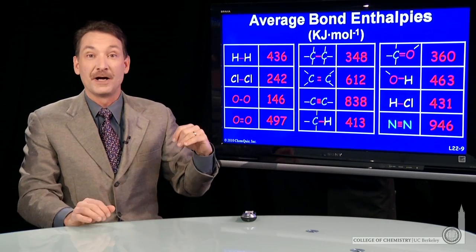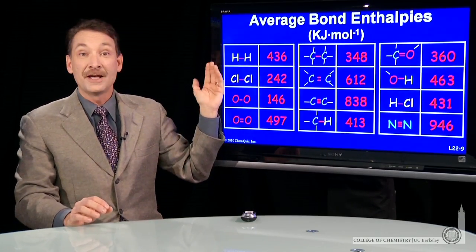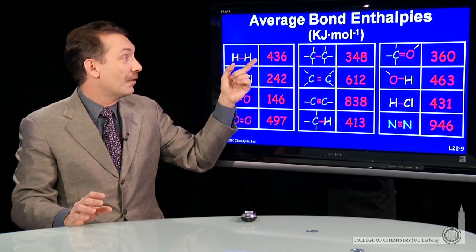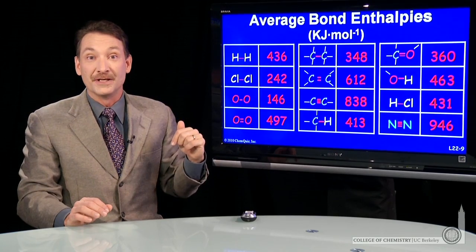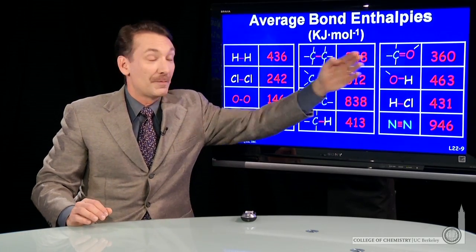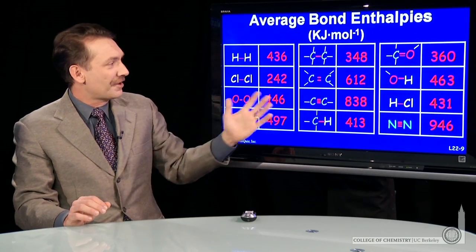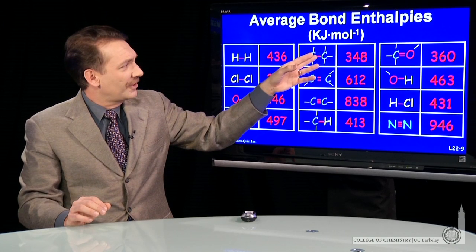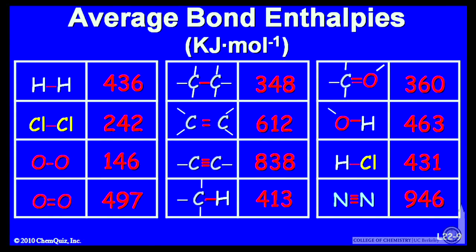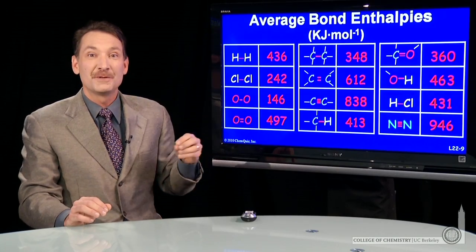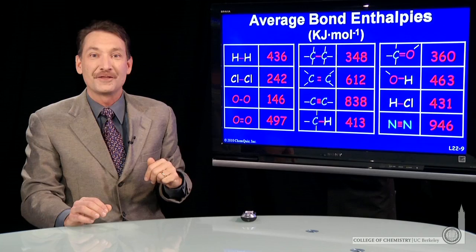The same thing applies for the double bond and the triple bond. Some of these are exact, of course — hydrogen-hydrogen has only one kind of bond, so 436 kilojoules is the exact bond enthalpy for hydrogen-hydrogen. But carbon-oxygen, that's an average. Notice that carbon-carbon double bonds are not twice as strong as single bonds on average, while the oxygen-oxygen double bond is more than twice the single bond. So we can't make direct correlations between bond strength and bond order from average bond enthalpy tables.